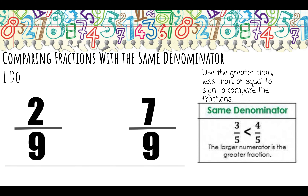Here I have the same denominator again — ninths. The larger numerator is the greater fraction. If I ate two-ninths of a cake and you ate seven-ninths of a cake, who ate more? You did. Two-ninths is less than seven-ninths.